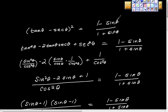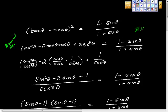The first thing here was binomial expansion. So expanding, this thing times itself gives tan² θ minus 2 tan θ sec θ plus sec² θ — that equals the right-hand side, which we're not going to mess with.